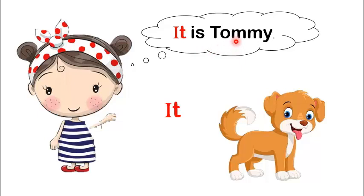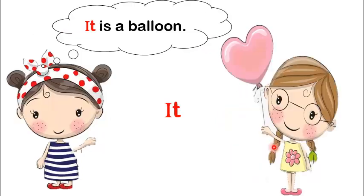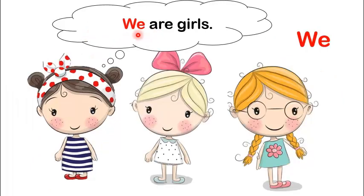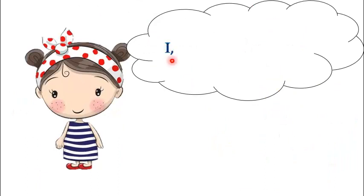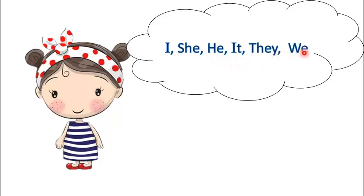Tommy is my dog. It is a balloon. We are girls. They are my friends. I, she, he, it, they and we.